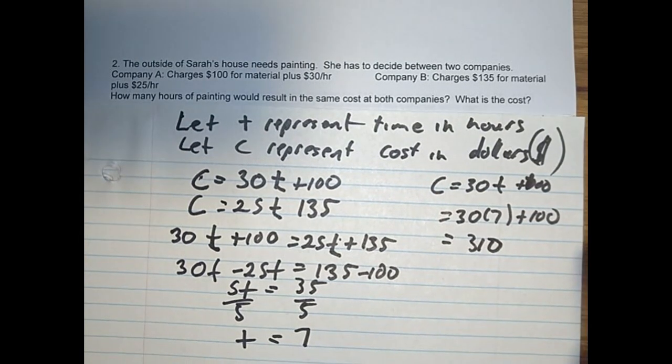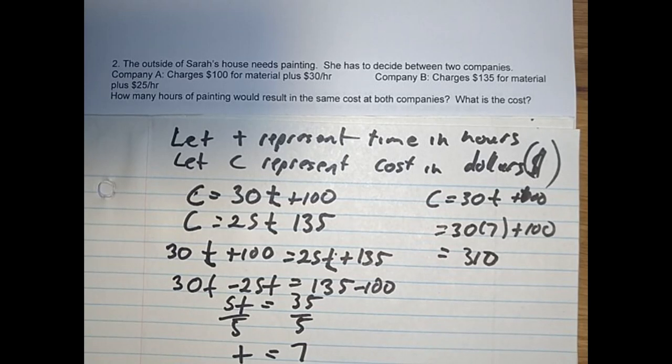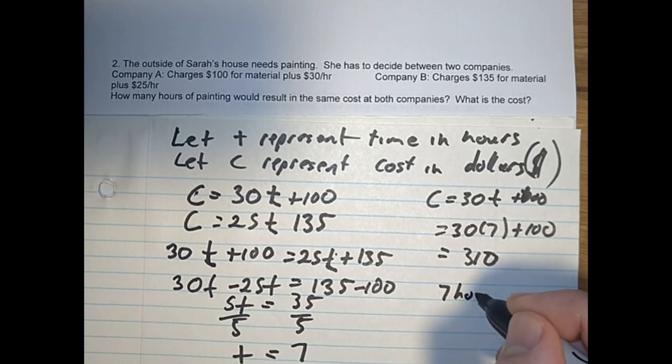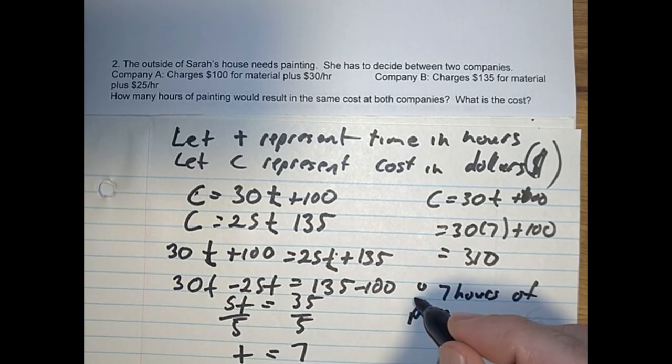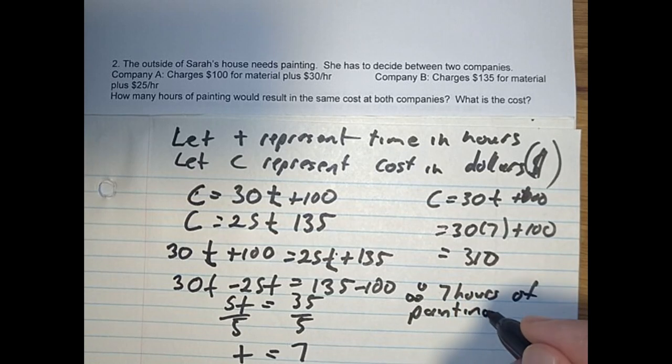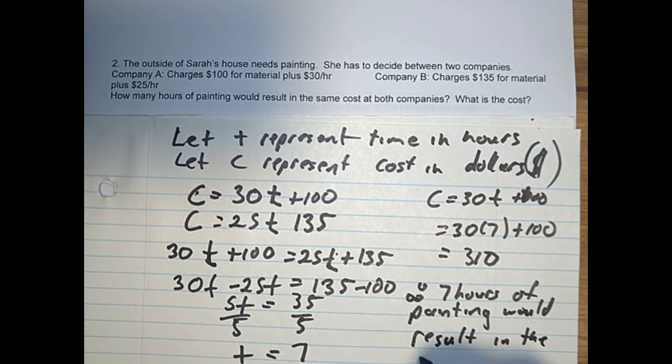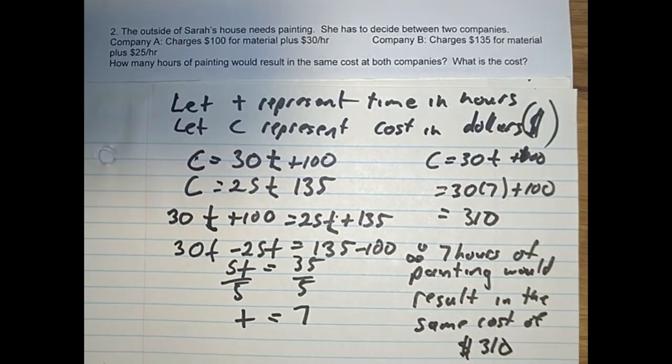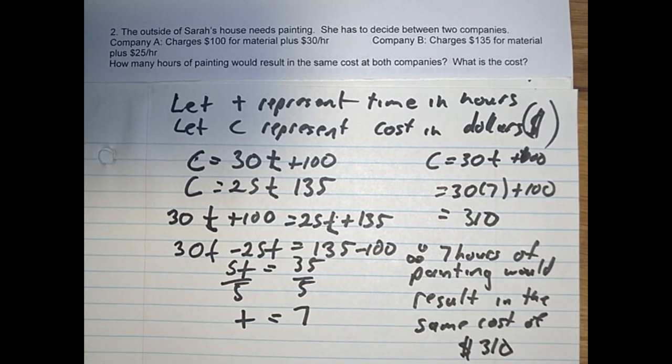Now we can answer our question: how many hours of painting would result in the same cost, and what is the cost? Seven hours of painting would result in the same cost of $310. Let's bring that down a bit. There, now I've got the whole question on this sheet. You can pause it if students need more time to copy that.